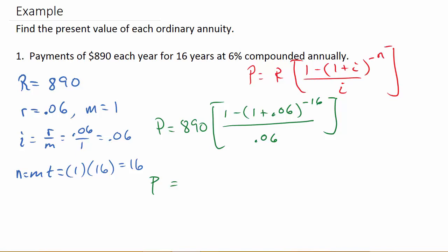And that should give you 0.606353716. And then hit divided by, with that number still in there, just hit divided by 0.06, and hit equals. And that should give you 10.10589527. And then times 890.